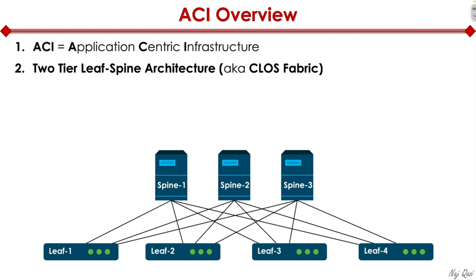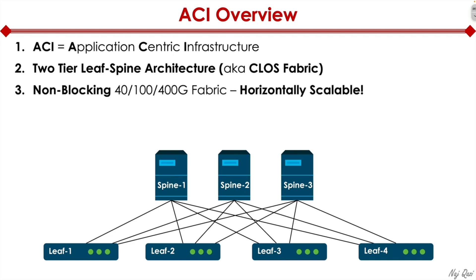From a physical connectivity standpoint, that's a key concept. Another important point is that it's a non-blocking fabric. Today's data centers require tremendous amounts of horsepower — you're looking at 40 gig, 100 gig, up to 400 gig type of fabric within the data center. It's 100% non-blocking all the way from the down ports connected to servers and endpoints plugged into the leaf switches through the spine. This model is also horizontally scalable — if you want to add more leaf switches, you can simply do so.